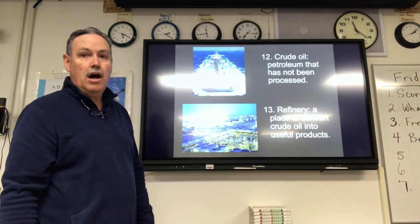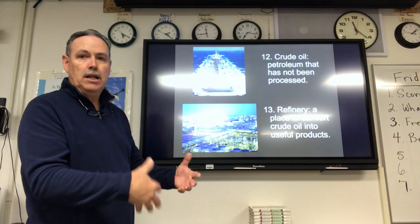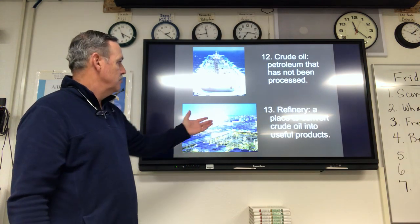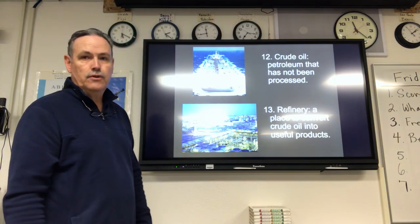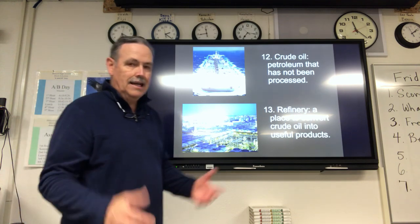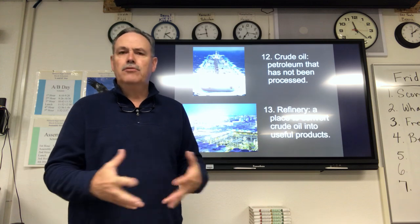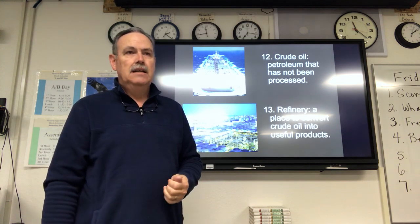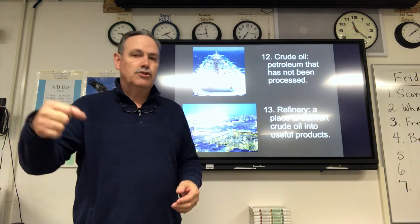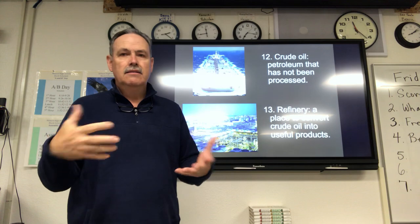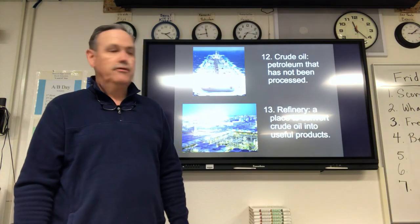Crude oil is petroleum that has not been processed. Once it's taken out of the ground, it goes through pipelines onto ships, then to a refinery — a place to convert the crude oil into useful products. Some of the most obvious are gasoline and diesel, but there are many other products as well: medicines, plastics. If you have a milk jug at home, that comes from crude oil. These are very important products.